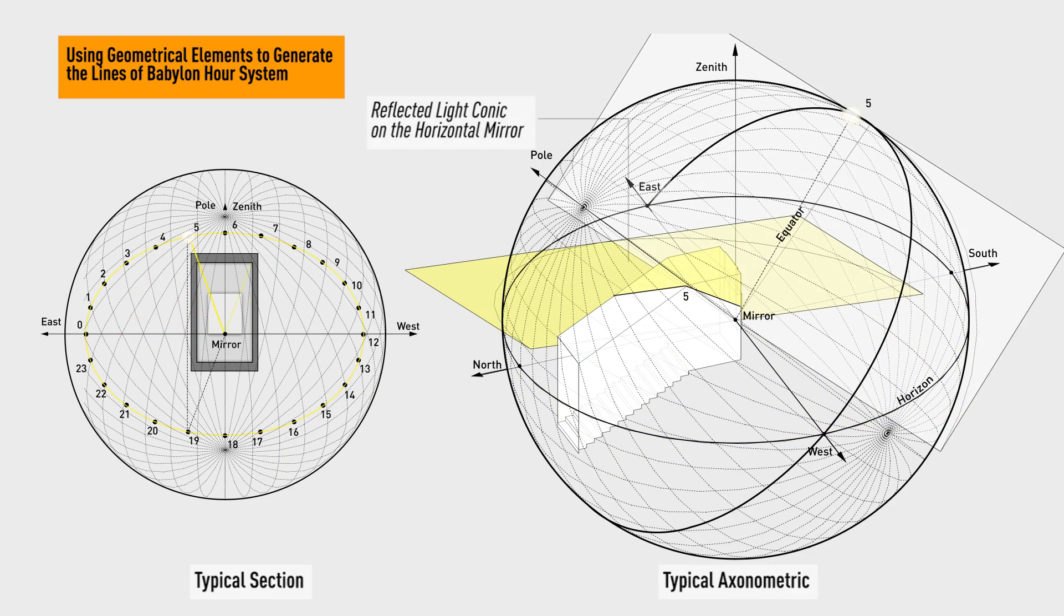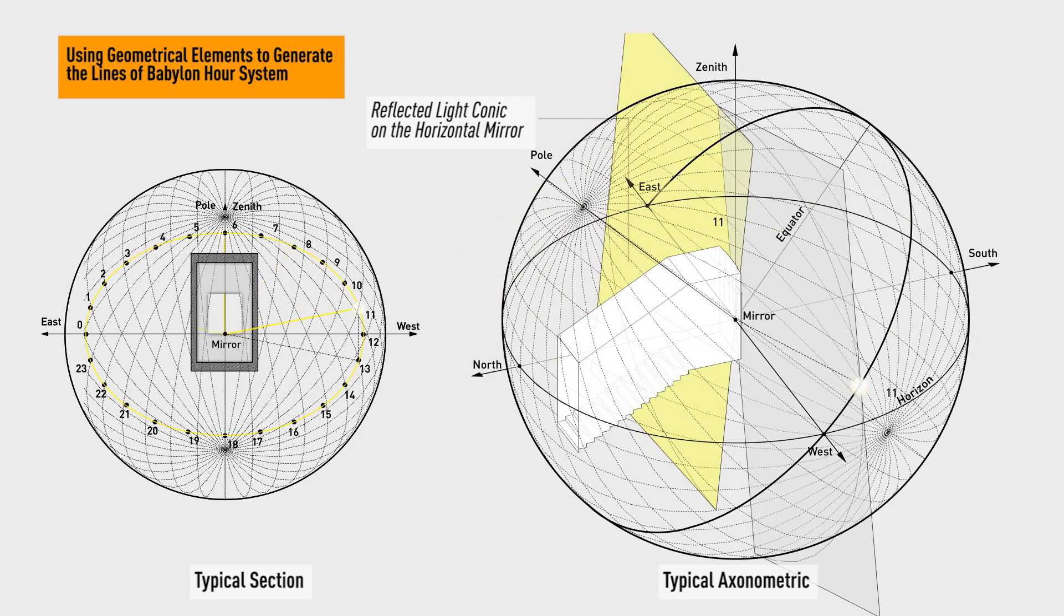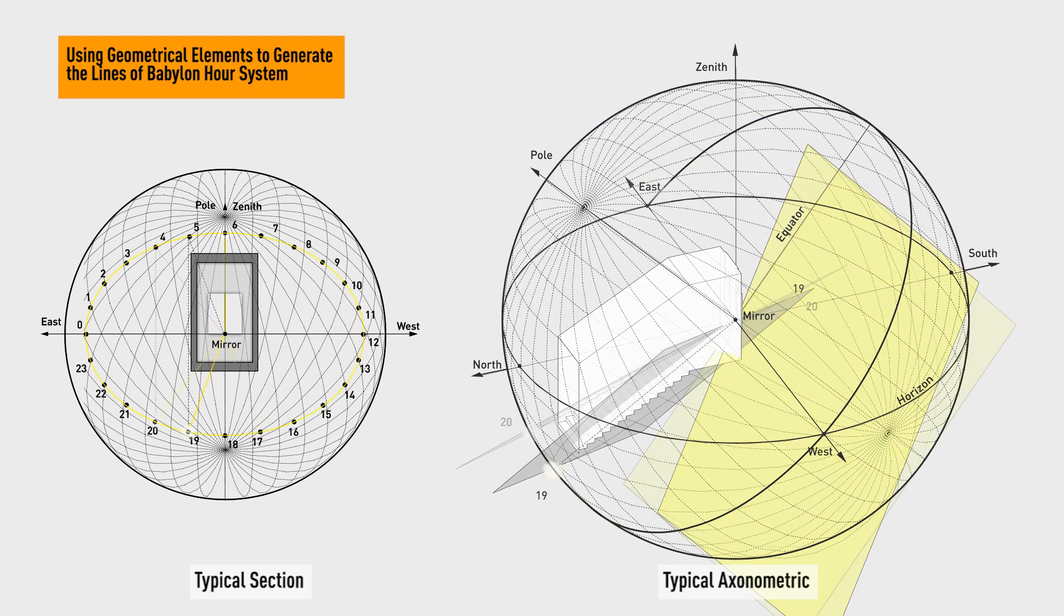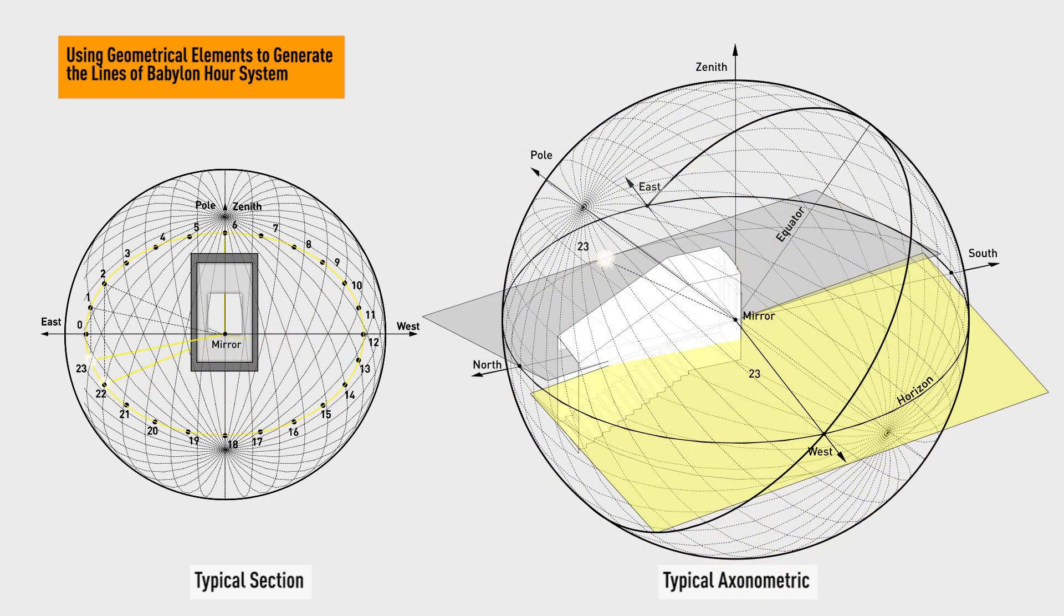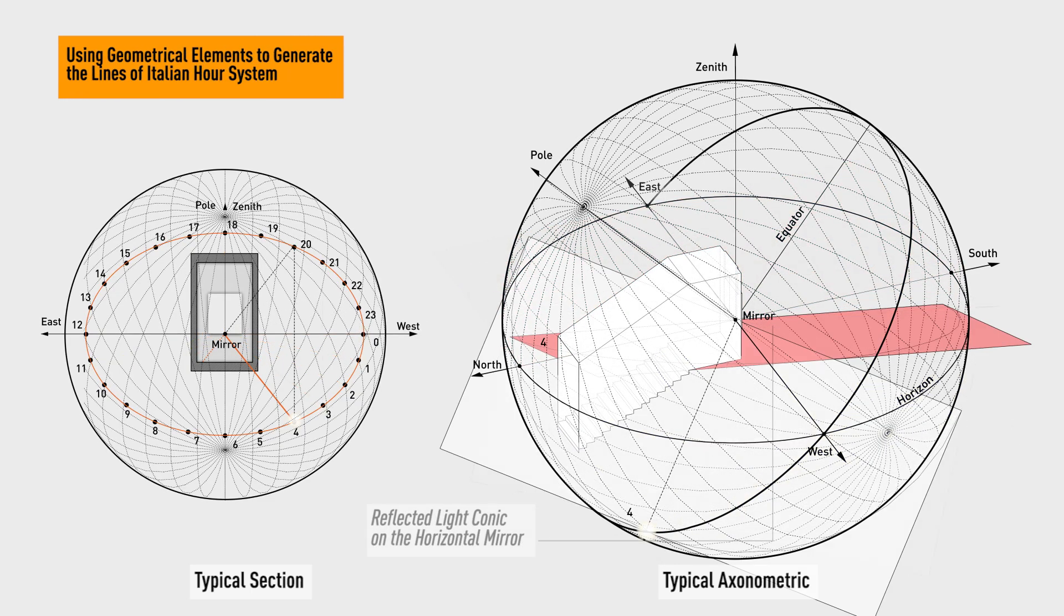Babylonian hours are counted from sunrise, while Italian hours are counted from the last sunset. The lines of this system are caused by planes with a rotation angle of 15 degrees around the north pole, starting from the horizon plane.